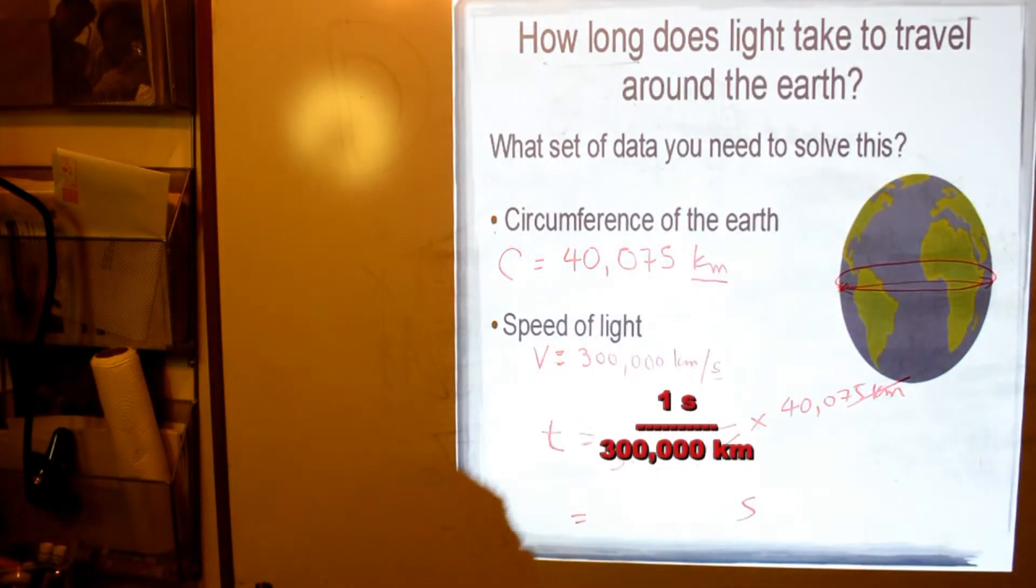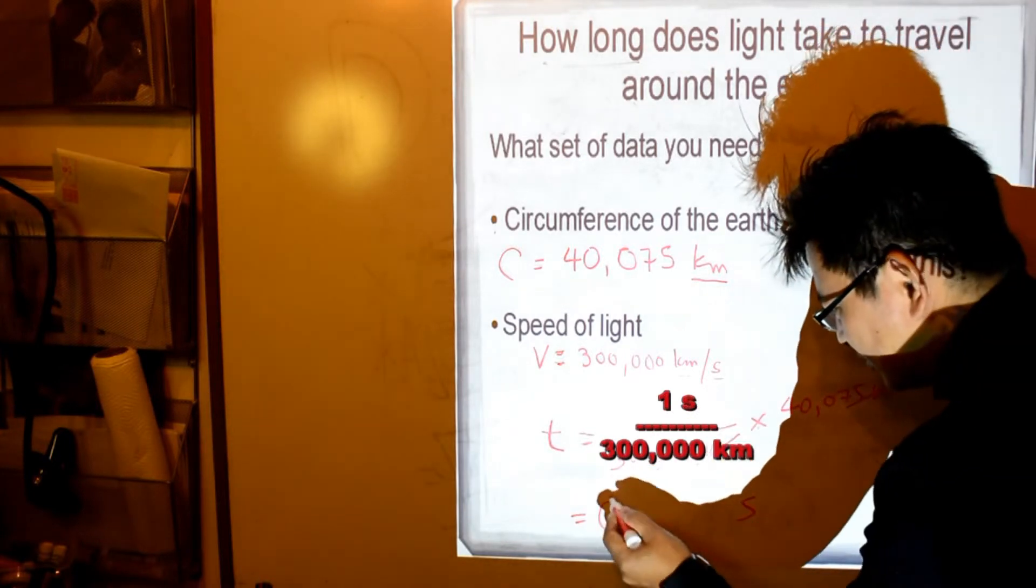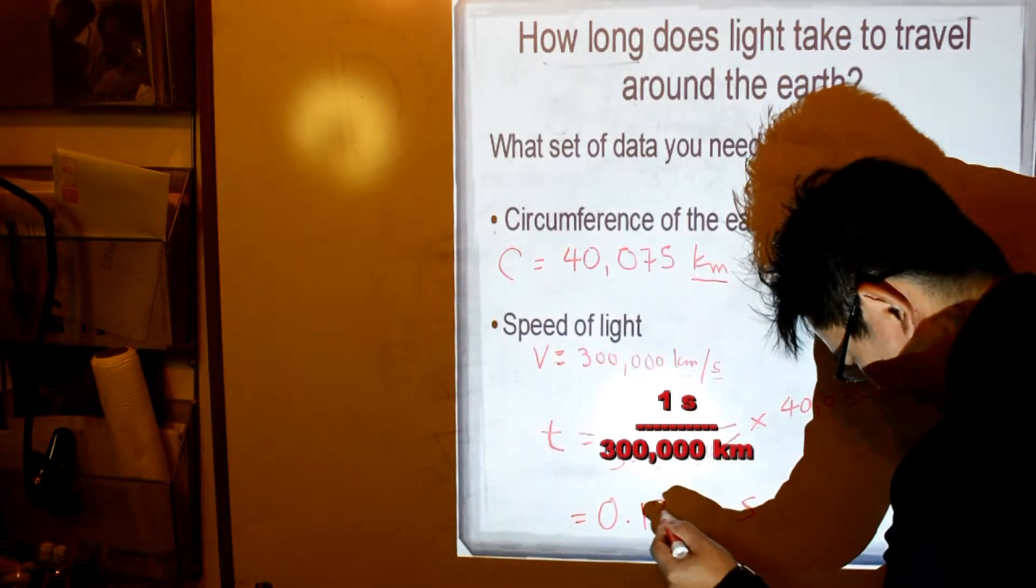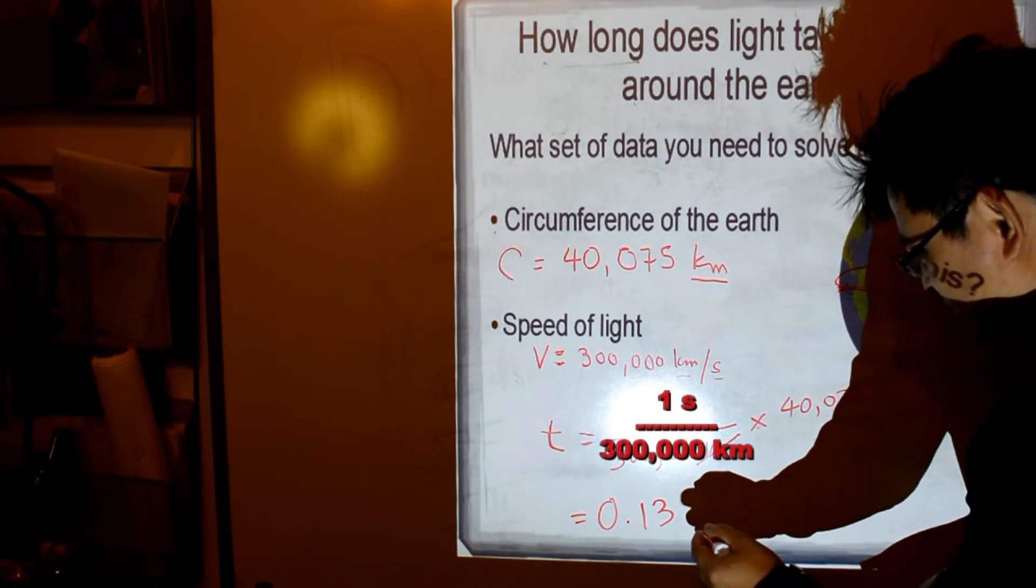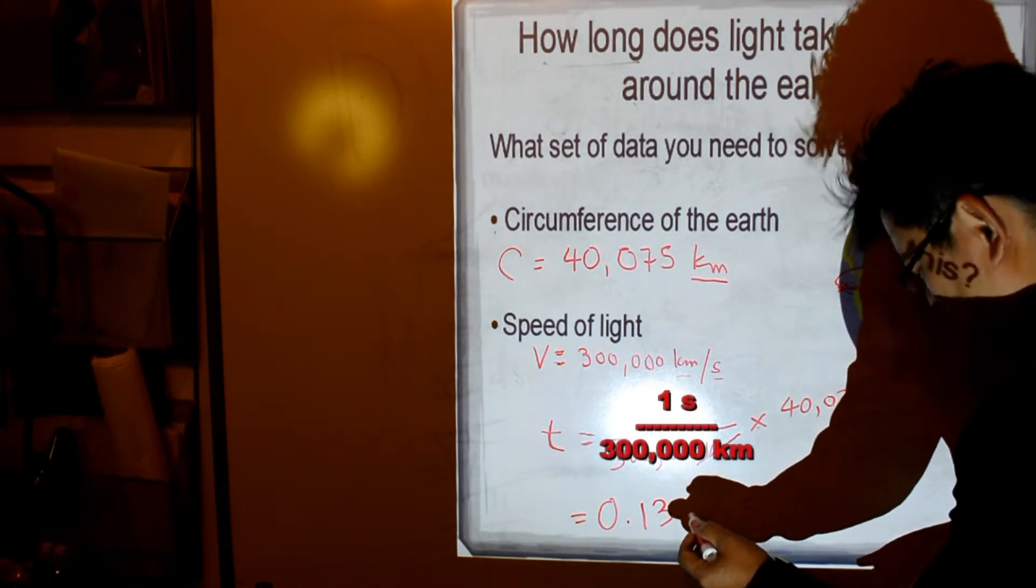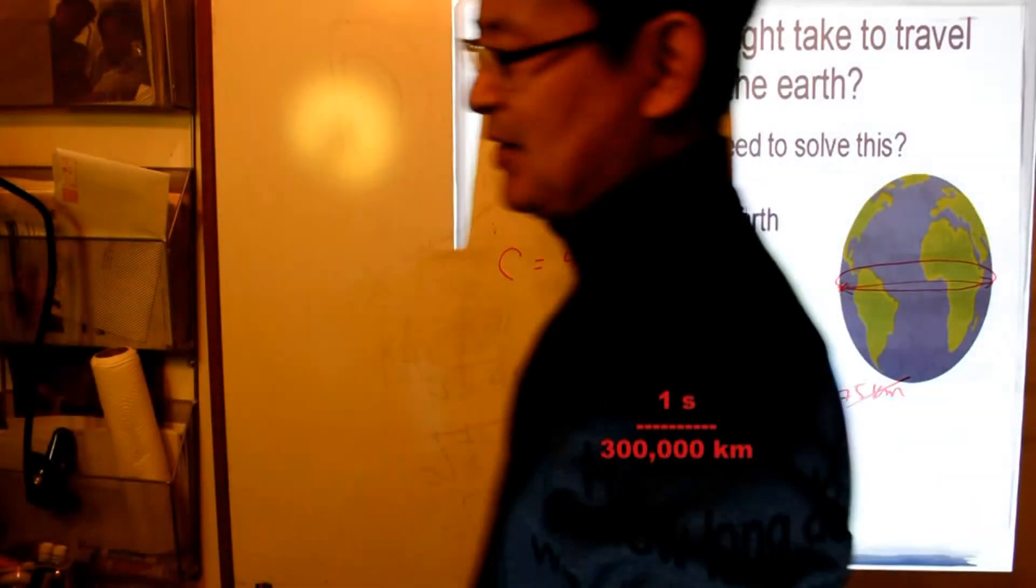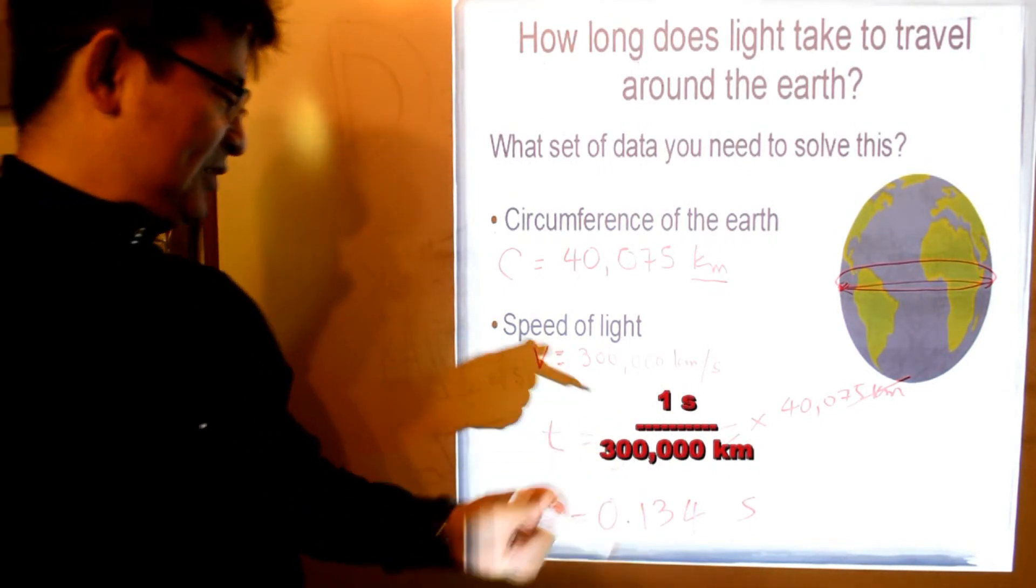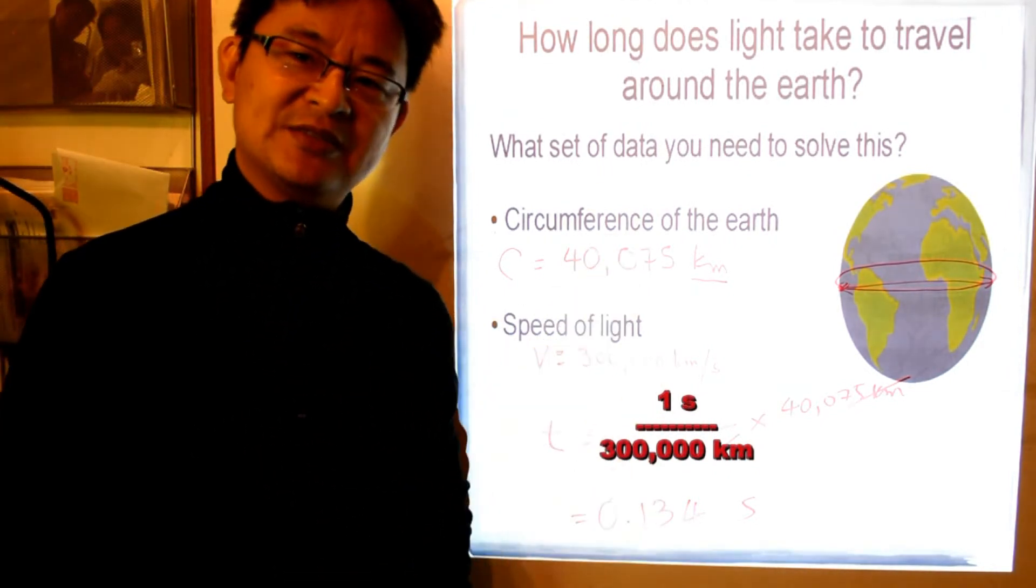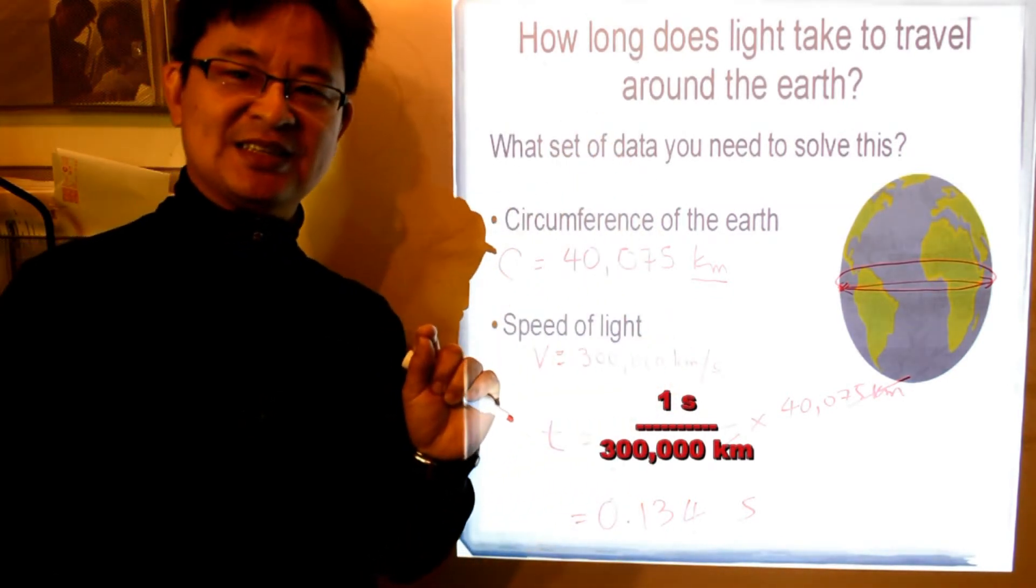So, you might want to grab your calculator. The answer is 0.13, and let's make it to three decimal places, 0.134. So, less than a second. In fact, a little bit above a tenth of a second. So a little bit more than a tenth of a second is how long light travels around the Earth. Interesting.